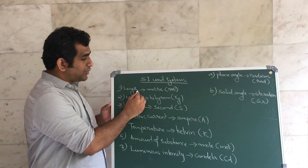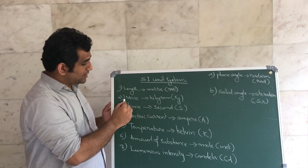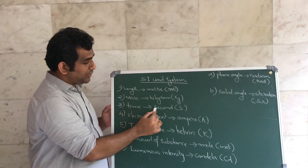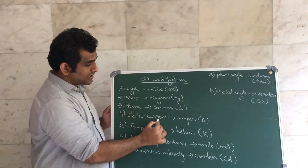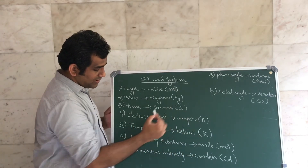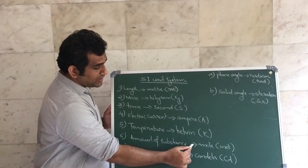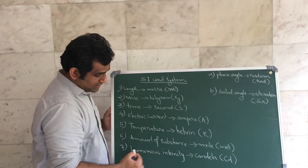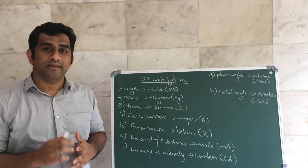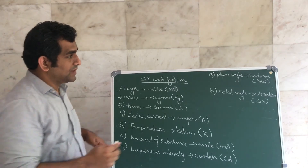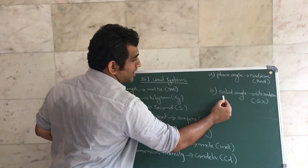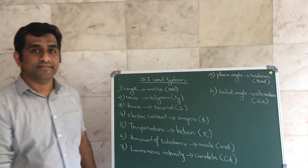The seven fundamental units are: length — meter, mass — kilogram, time — second, electric current — ampere, temperature — Kelvin, amount of substance — mole, and luminous intensity — candela. The two supplementary units are: plane angle — radian, and solid angle — steradian.